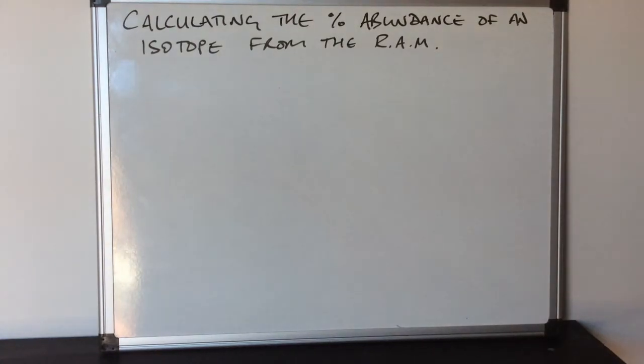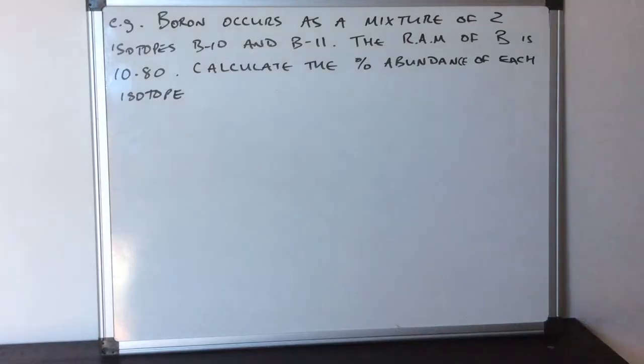In this video I'm going to look at how you calculate the percentage abundance of an isotope from the relative atomic mass. I'll use this question to explain how it's done.